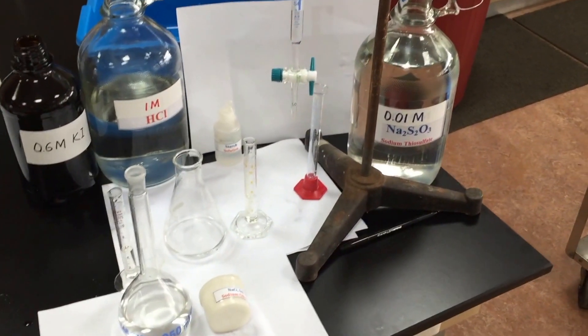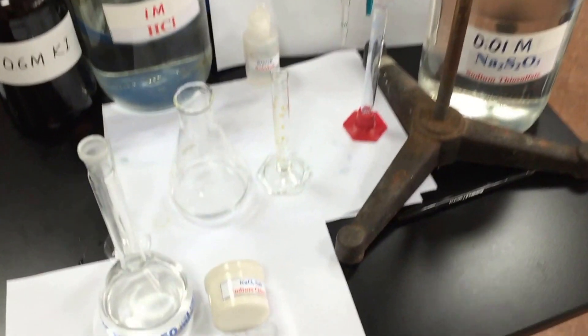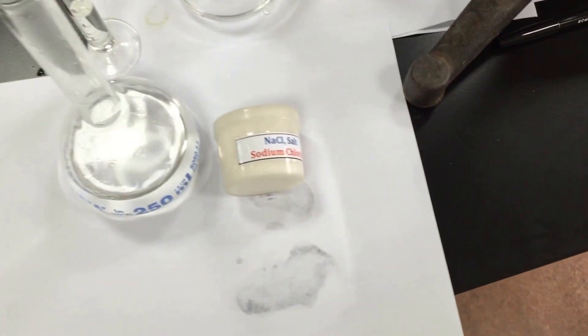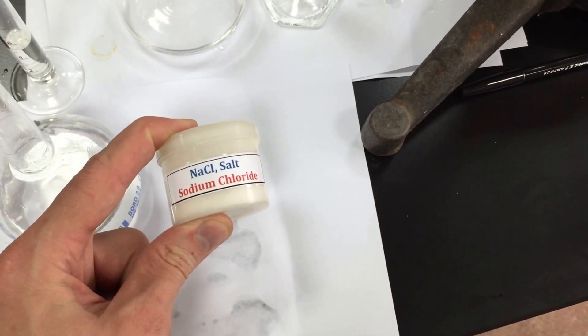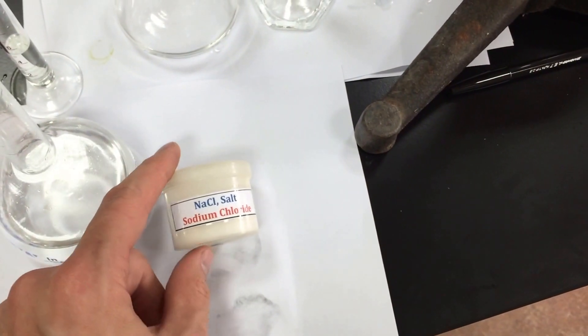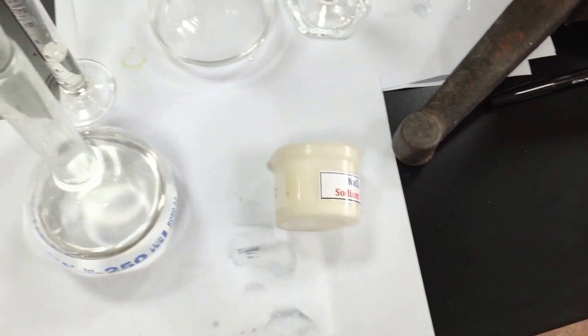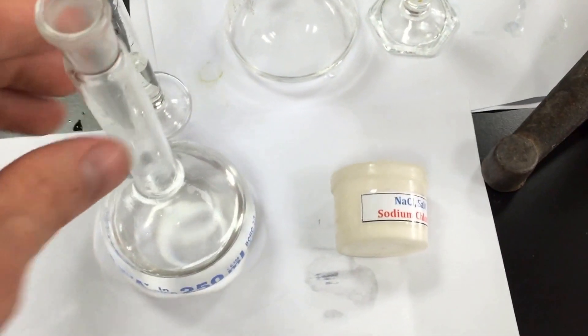This experiment is determining the amount of iodate ion that is present in table salt. So what we have here is table salt. I've taken 50 grams, accurately weighed out 50 grams.